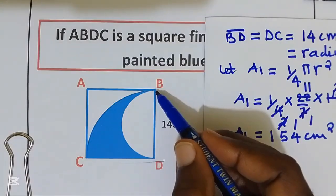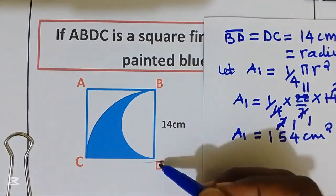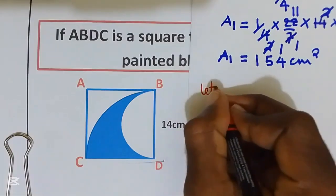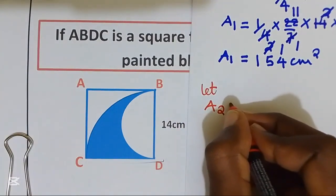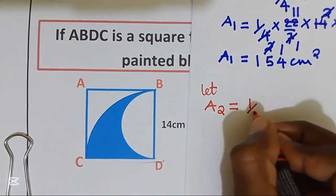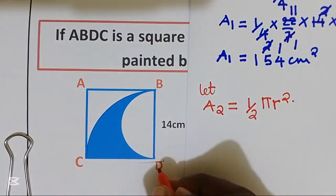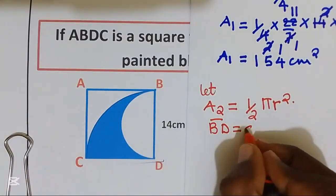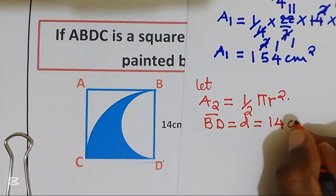Now, let us find the area of semi-circle, where B, D is a diameter of this semi-circle. Let A2 be the area of the semi-circle, which is given by a half pi r squared. B, D is a diameter, and this is equal to 14 cm.